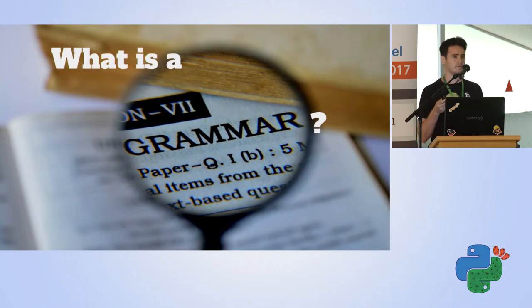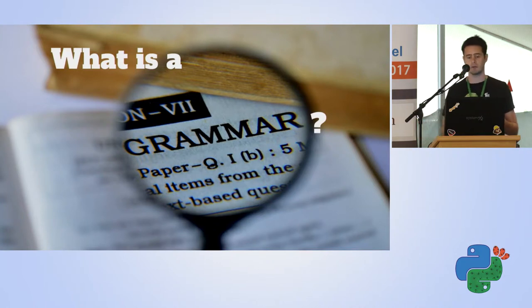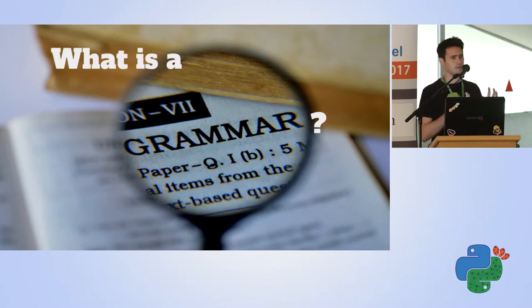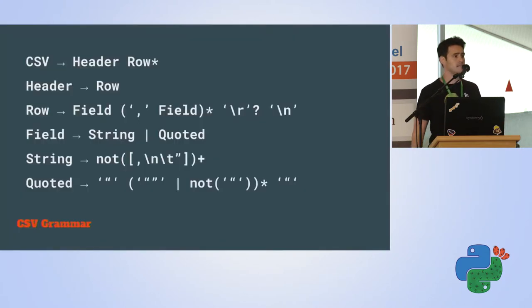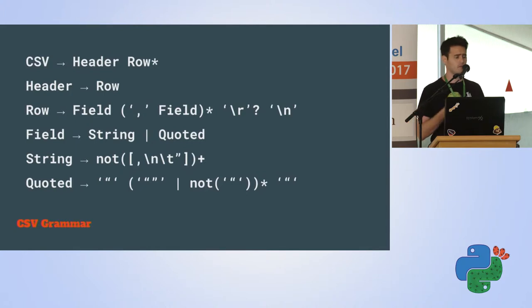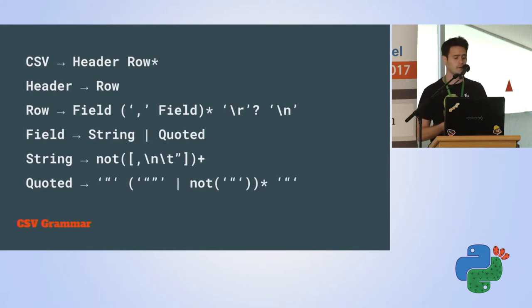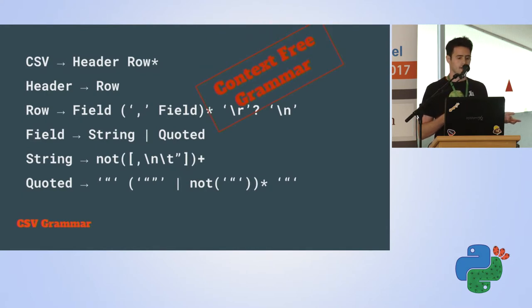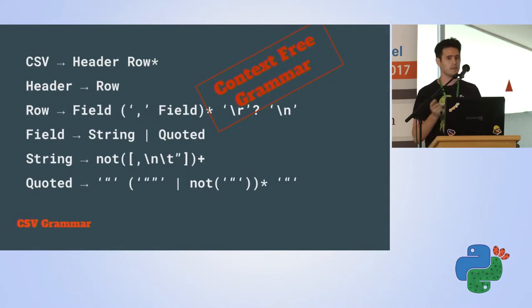A grammar is basically a bunch of rules that we use to define a language. It says this language is defined from this rule, which means this rule and so on recursively. We'll take CSV as an example. Our first CSV rule says CSV is a header and then zero or more rows. A header is just the same as a row. A row is a field and then zero or more comma-separated fields with some terminator. A field is either a string or a quoted string. That kind of grammar is called context-free grammar, and that's the kind we're going to limit our discussion to.